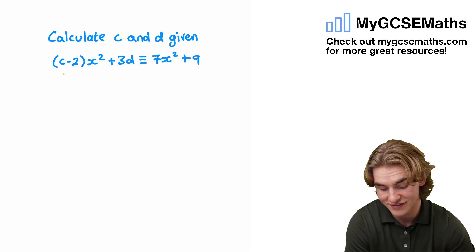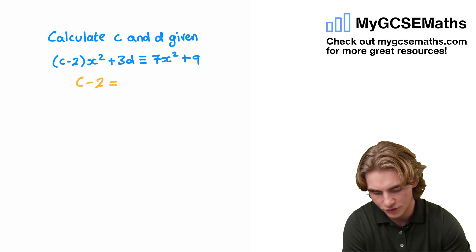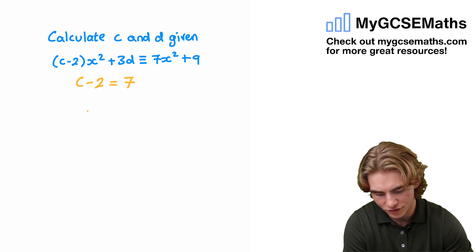What that basically tells us is that c-2 is going to be equal to 7, and that 3d is going to be equal to 9.